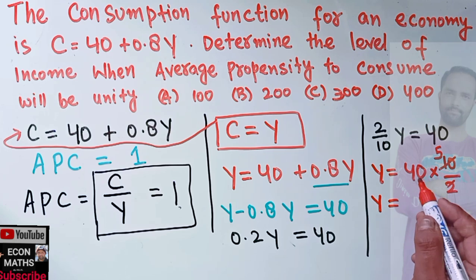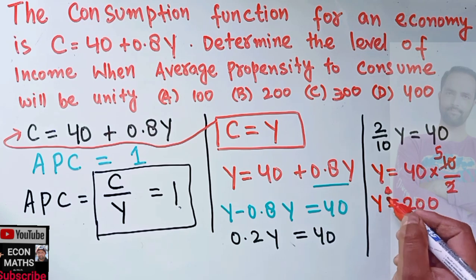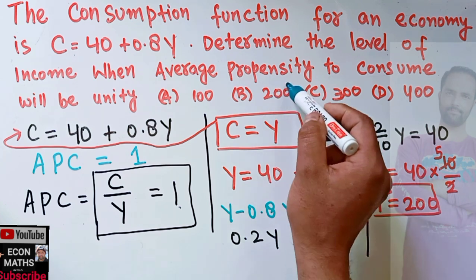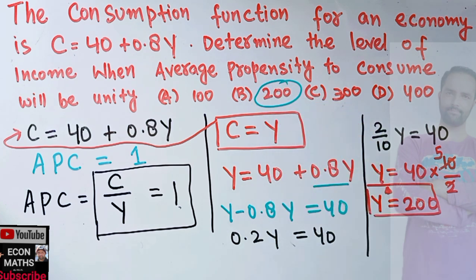That means the level of income will be 200 when APC is unity in the given function. I hope I make myself clear in this video. Thank you.